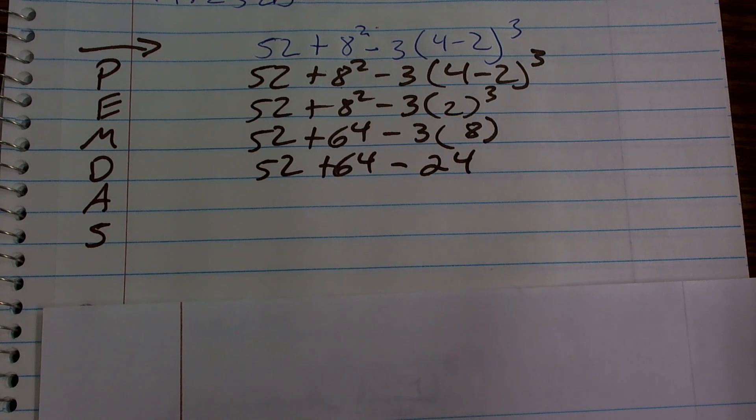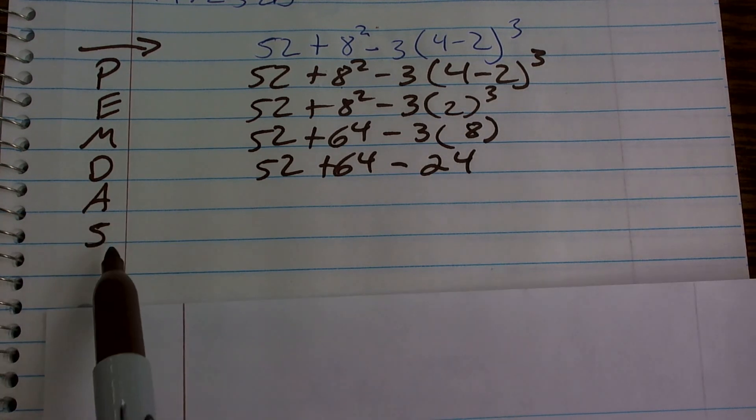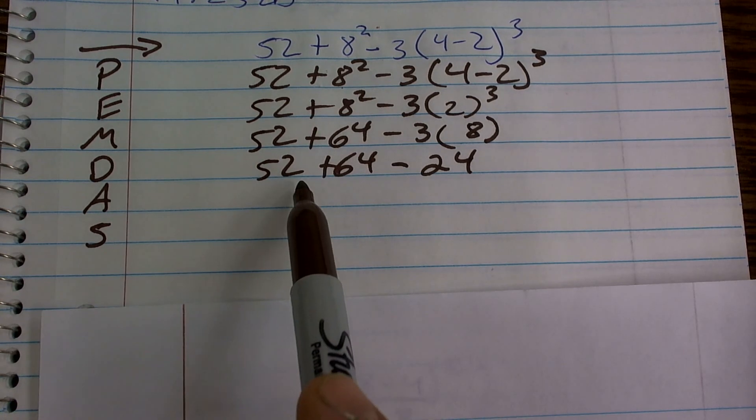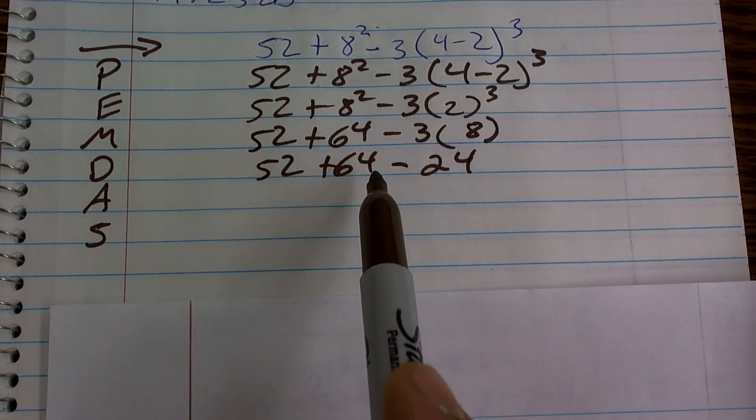So now I just need to go ahead and add up. I'm sorry. So now I just need to do addition and subtraction from left to right. So then what I have is I do 52 plus 64.